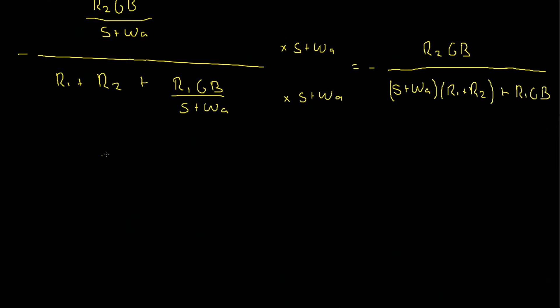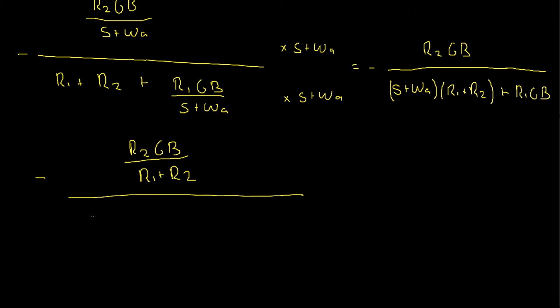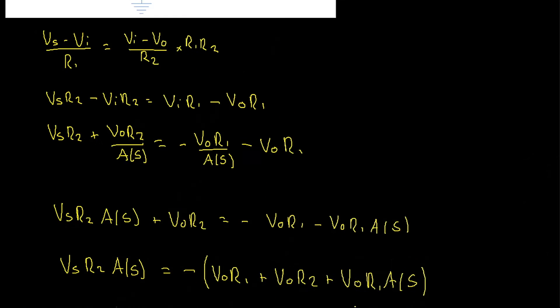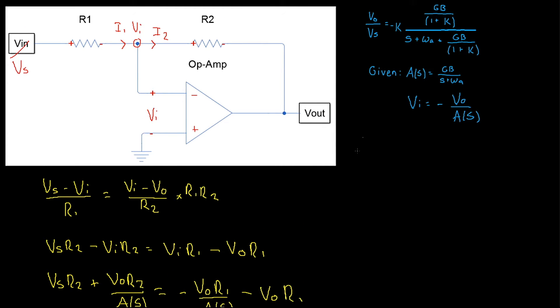Dividing through by r1 r2 gives us negative r2 gb divided by r1 plus r2, divided by s plus omega_a, the r1 and r2 are gone as we're dividing through by r1 plus r2, plus r1 gb divided by r1 plus r2. This equation for the op amp is correct, however, it's not in the form that they want. So let's just do a little bit of algebra just to clean it up a bit. Sorry guys, I just realized I forgot one thing. At the start here, our value k is defined by r2 divided by r1.